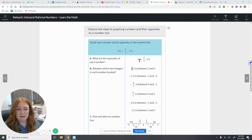So 2.2 becomes negative 2.2. Negative 3/4 becomes positive 3/4. And negative 1.5 becomes positive 1.5.